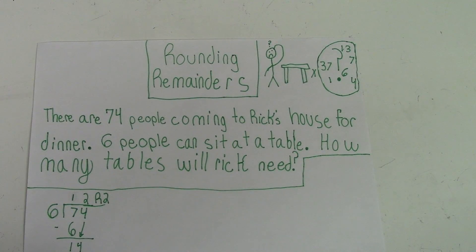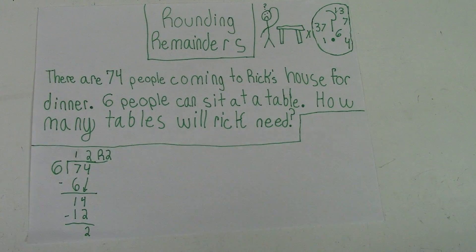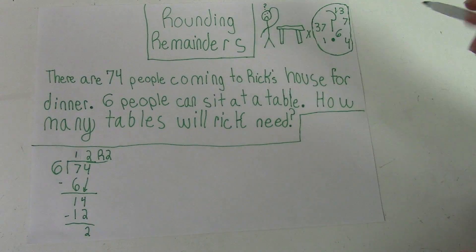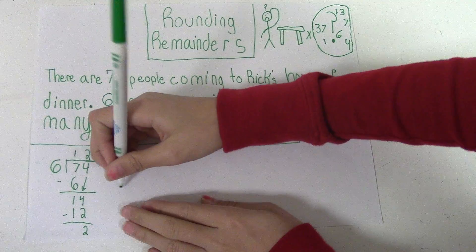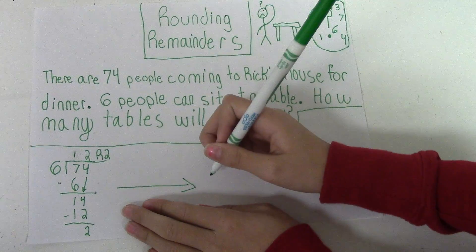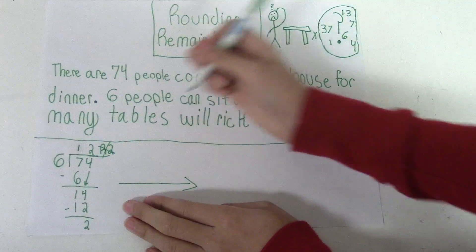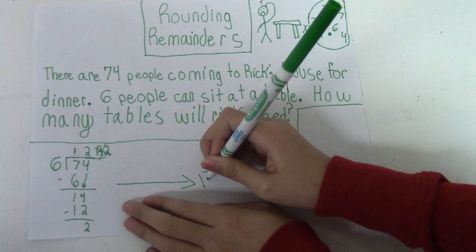Strategy three: rounding remainders. There are 74 people coming to Rick's house for dinner. Six people can sit at a table. How many tables will Rick need? I've already solved the problem. Since it says 'rounding remainders,' you're probably guessing that you are supposed to round it to the next whole number. Forget about the remainder and just round it up to the next number, which is 13.